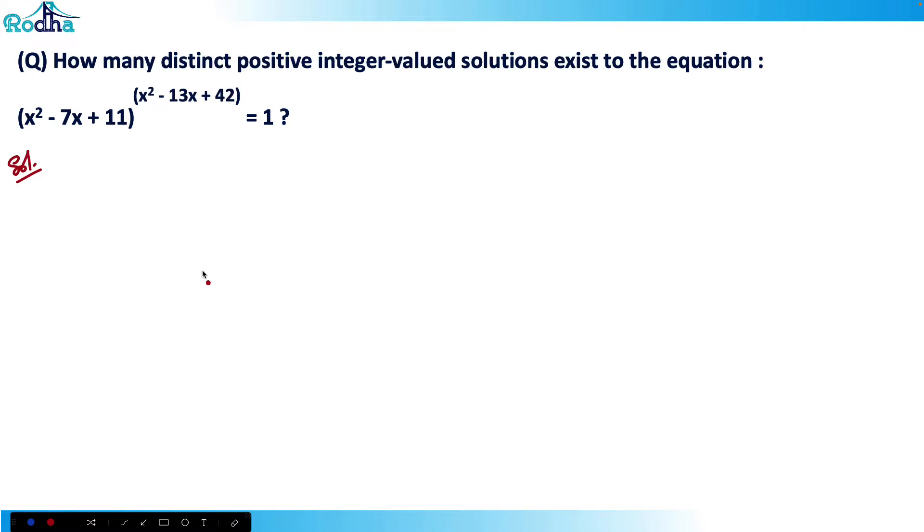Hi guys, let's look at this question from CAT 2020 slot 1 - a very good question. This question asks: how many distinct positive integer-valued solutions exist to this equation: (x² - 7x + 11) raised to (x² - 13x + 42) equals 1?